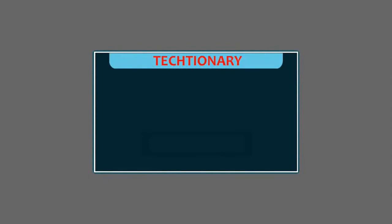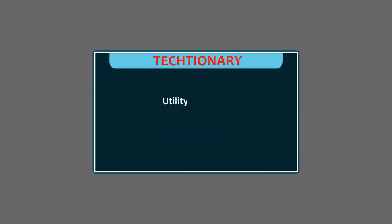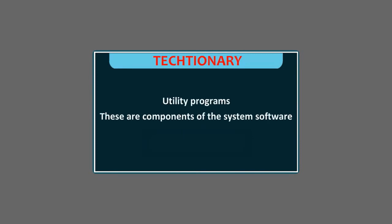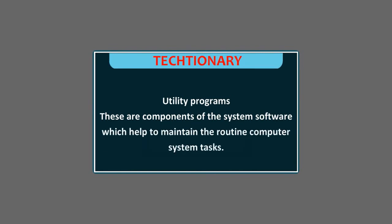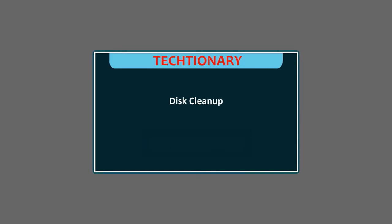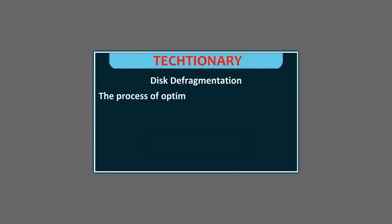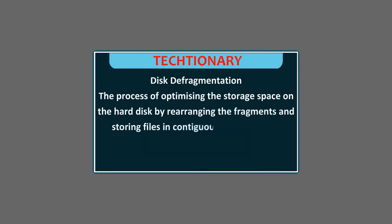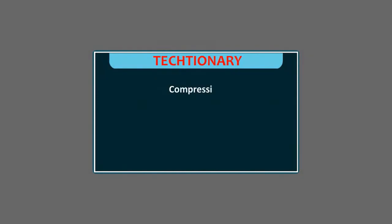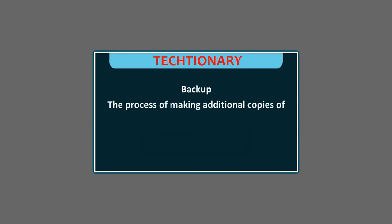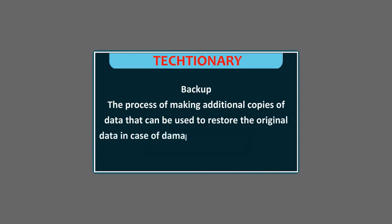Glossary. Fonts: Different styles of writing text or characters in a specific size. Utility Programs: Components of the system software which help to maintain routine computer system tasks. Disk Cleanup: The process of cleaning up the hard disk drive. Disk Defragmentation: The process of optimizing the storage space on the hard disk by rearranging the fragments and storing files in contiguous disk locations. Compression: Shrinking a file to reduce its size. Backup: The process of making additional copies of data that can be used to restore the original data in case of damage or accidental data loss.